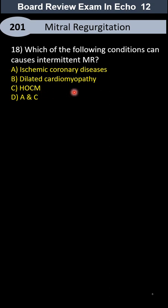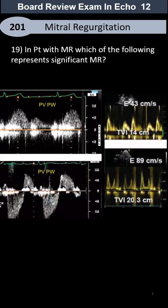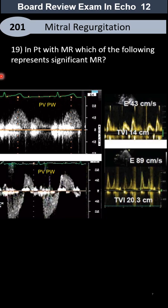How about hypertrophic obstructive cardiomyopathy? A patient with MR — we have two different types of Doppler. Two of them belong to the pulmonary vein. You have to correspond with the EKG to make the diagnosis.